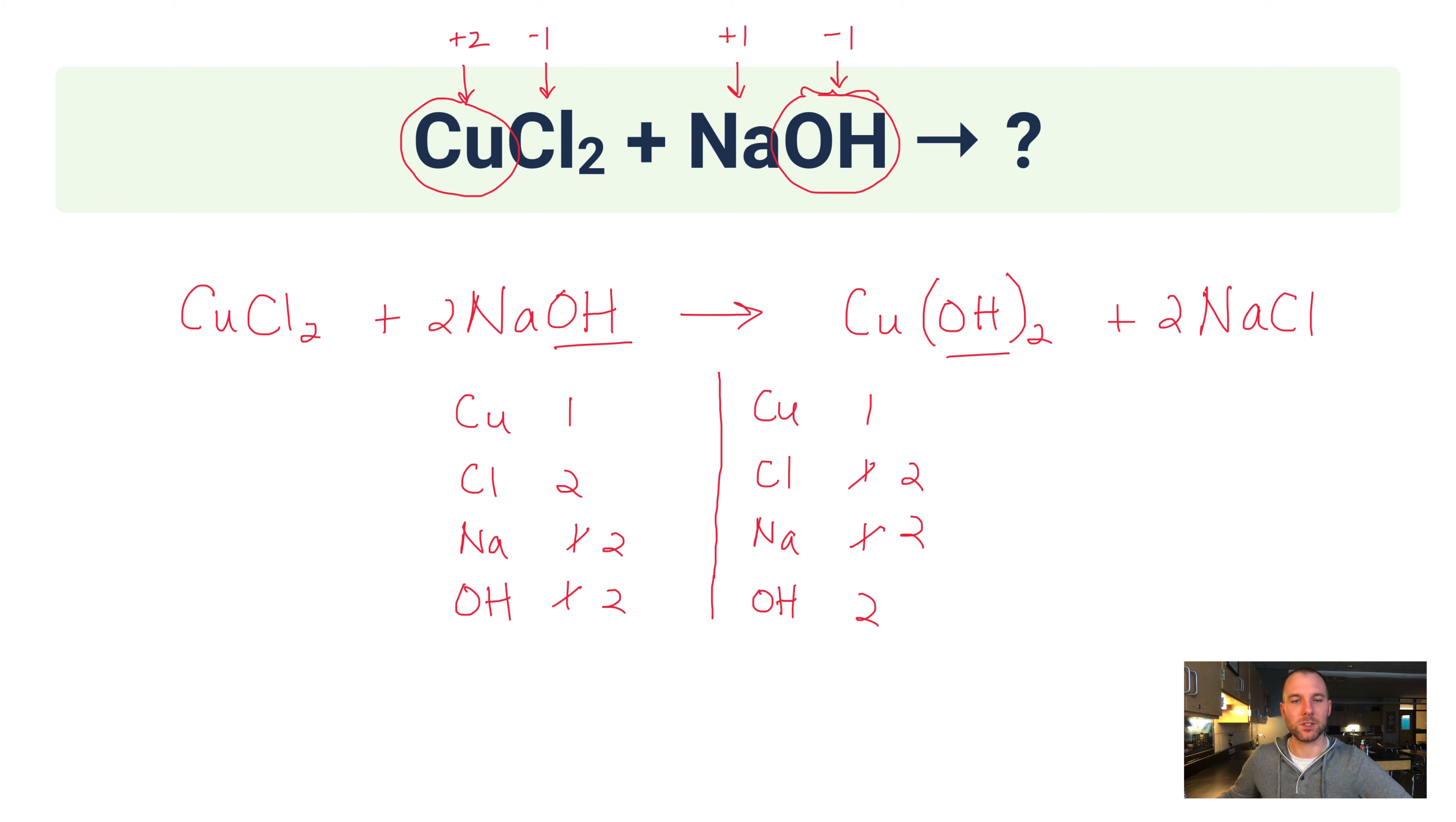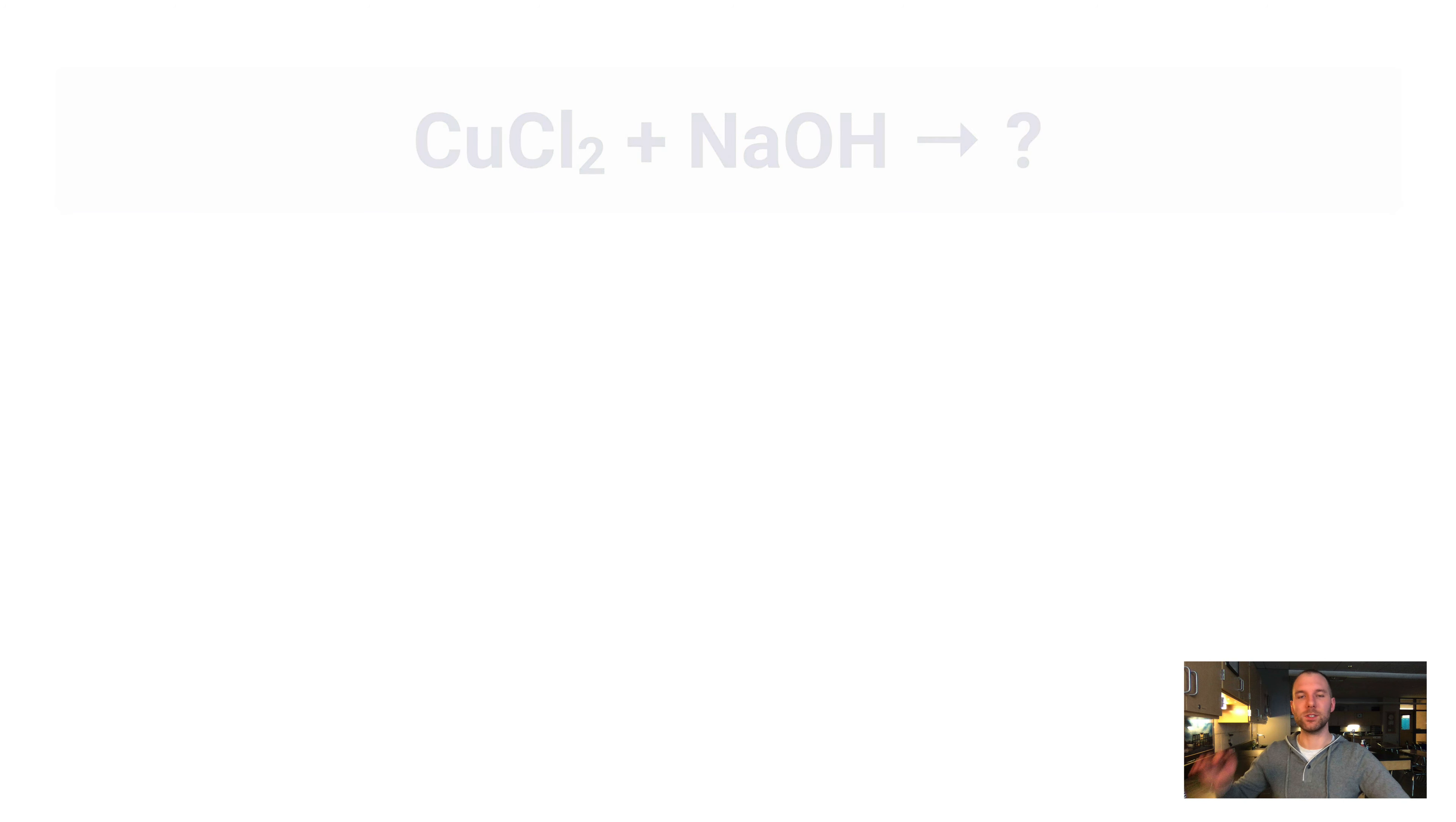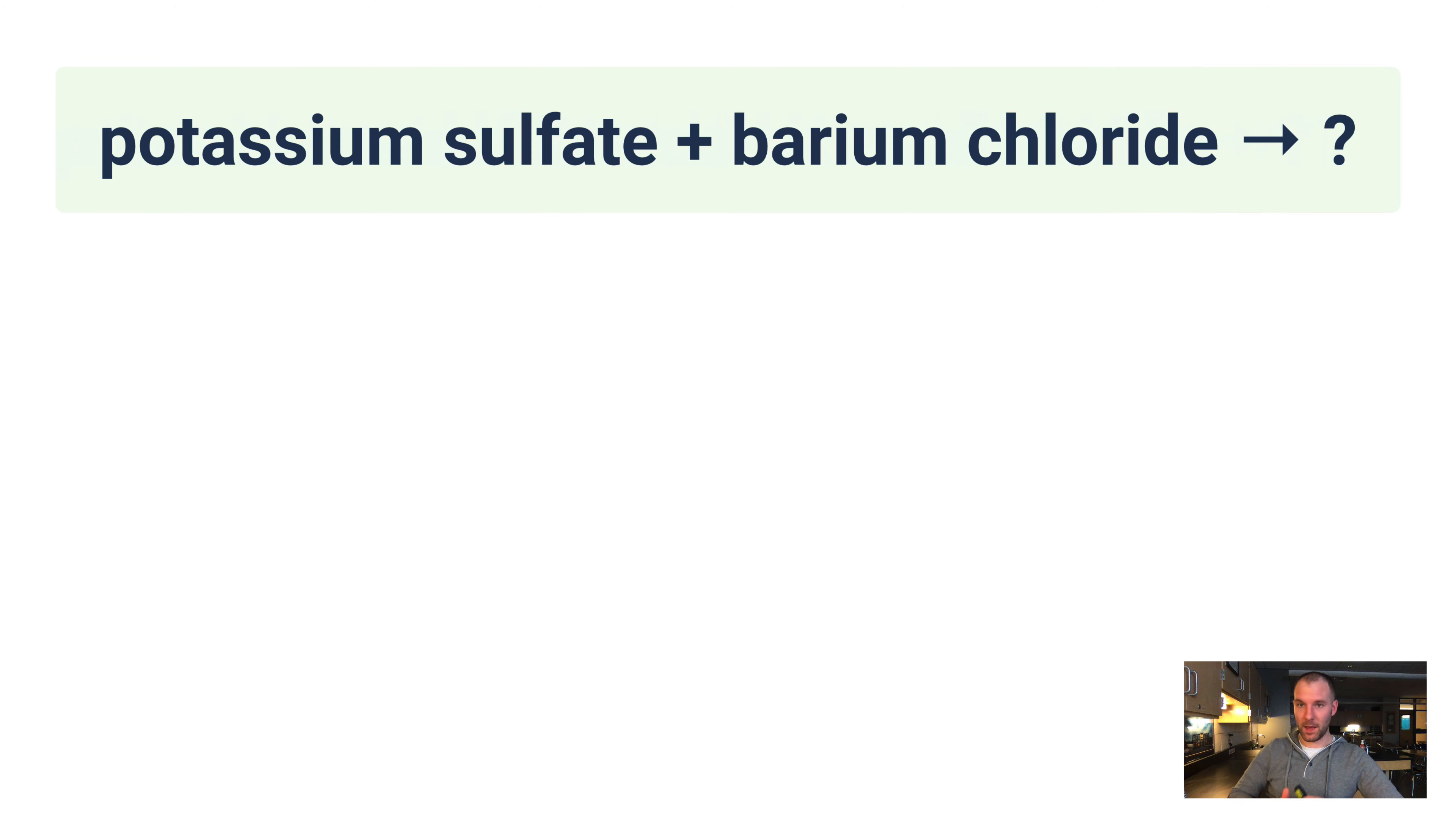CuCl2 + 2NaOH makes Cu(OH)2 and 2NaCl. Alright, here's another one. Potassium sulfate and barium chloride. These are the names. We have to come up with the formulas.